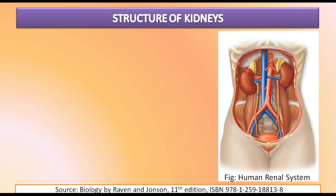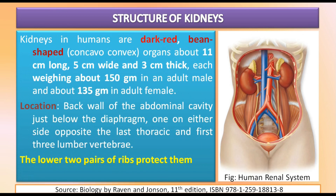Let us go into the detail of the structure of human kidneys. Here you can see the figure of the human renal system showing the position of the different components. Kidneys in human beings are dark red bean-shaped, that is concavo-convex, organs which are about 11 cm long, 5 cm wide, and 3 cm thick, each weighing about 150 grams in an adult human male and about 135 grams in an adult human female. The kidneys are located on the back wall of the abdominal cavity just below the diaphragm, present one on either side opposite the last thoracic and first three lumbar vertebrae, and the lower two pairs of ribs protect the kidneys.